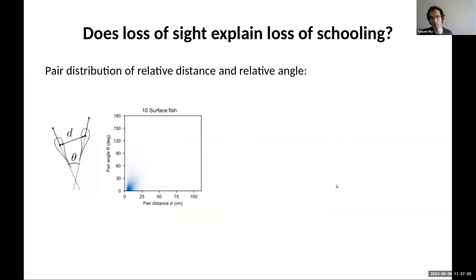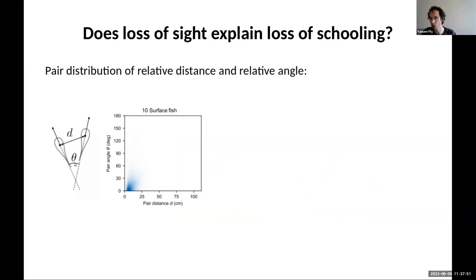To address this question, we look at pairs of fish. For a group of ten fish, we look at every possible pair in every frame of the video. For each pair, we measure the distance between the two fish and the angle between their swimming directions. We can then plot a joint distribution function of those two quantities, with distance on the horizontal axis and the angle between directions on the vertical axis.